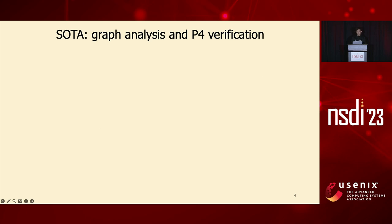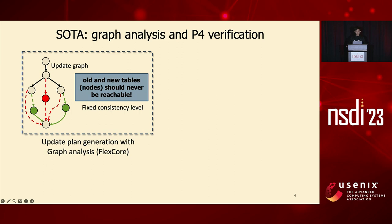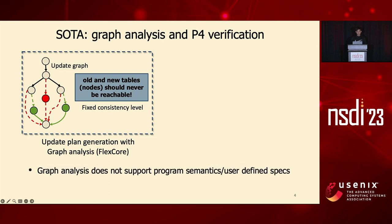We have two possible approaches. The first, adapted by existing work, is graph analysis. At a high level, it represents all P4 program updates using a so-called program update graph and invokes graph reachability analysis to check properties at runtime. The problem with this approach is that it completely abstracts away all P4 program semantics, which are essential for exploring better update plans. Moreover, it cannot support user-defined specifications because it can only reason about fixed consistency levels expressible by ad-hoc graph algorithms.